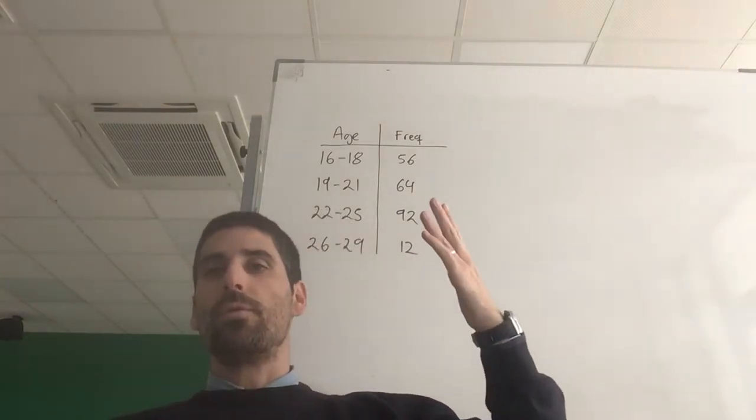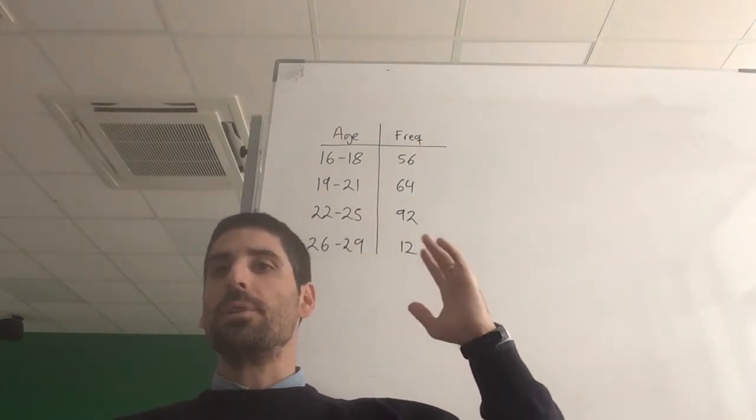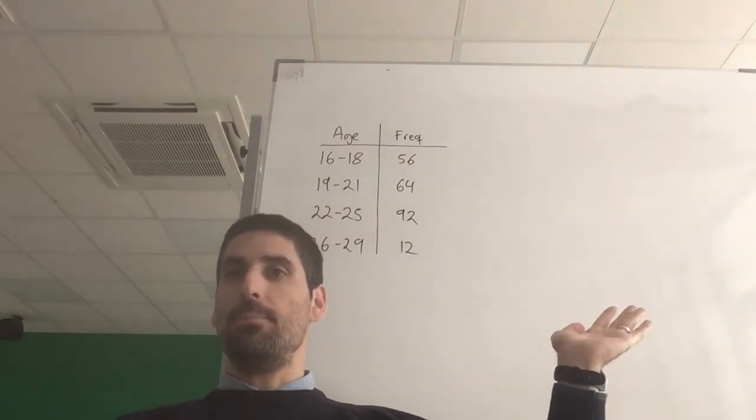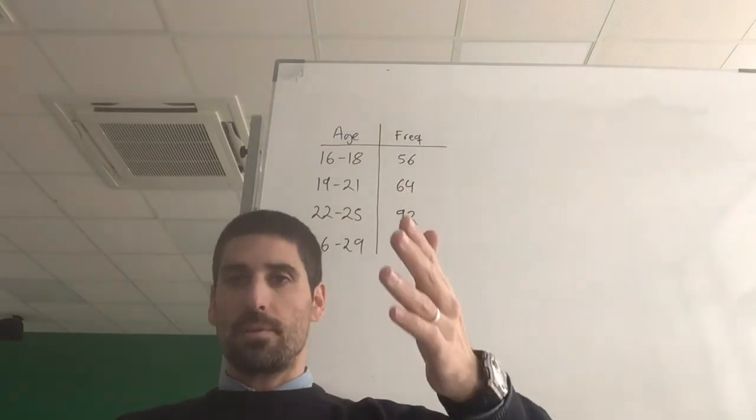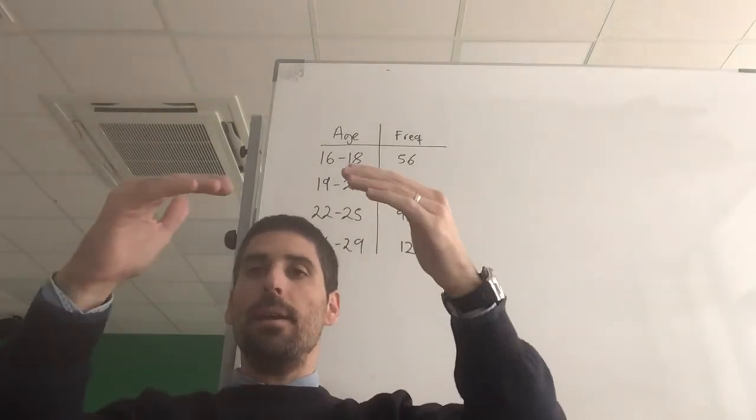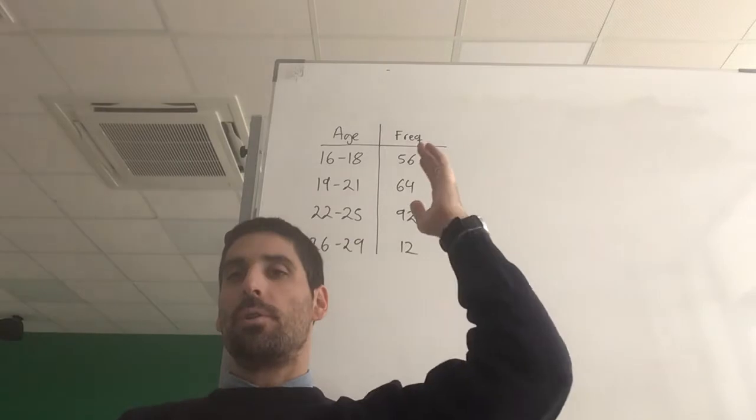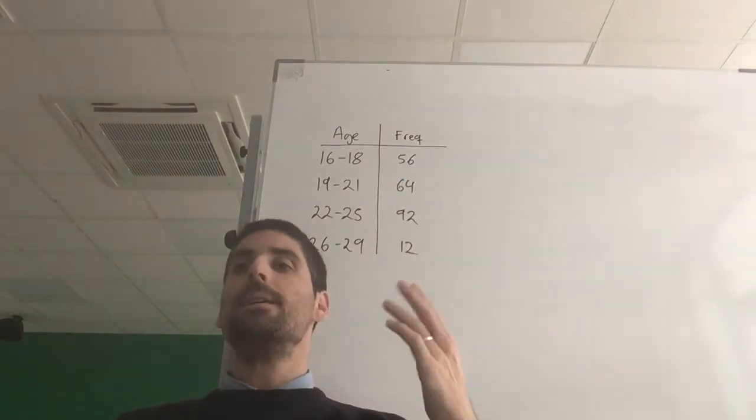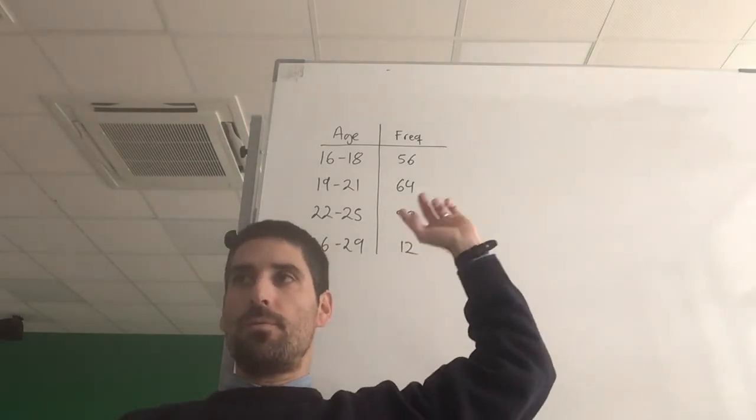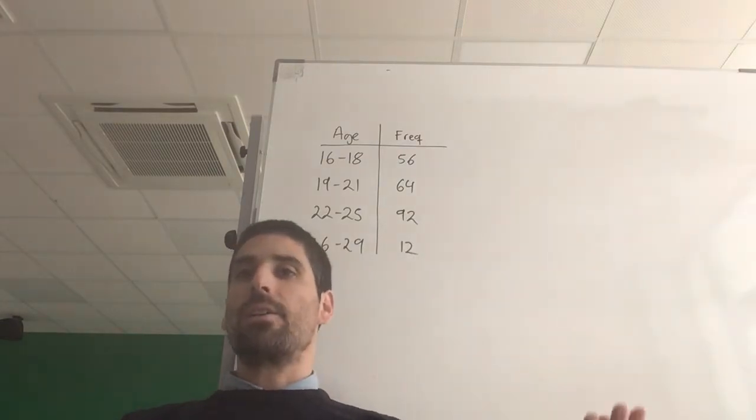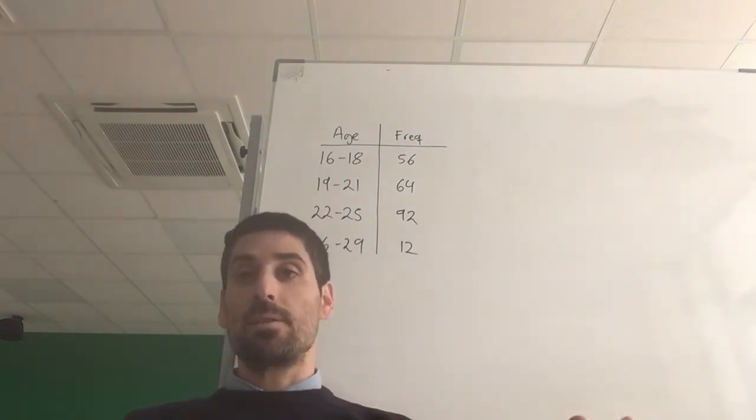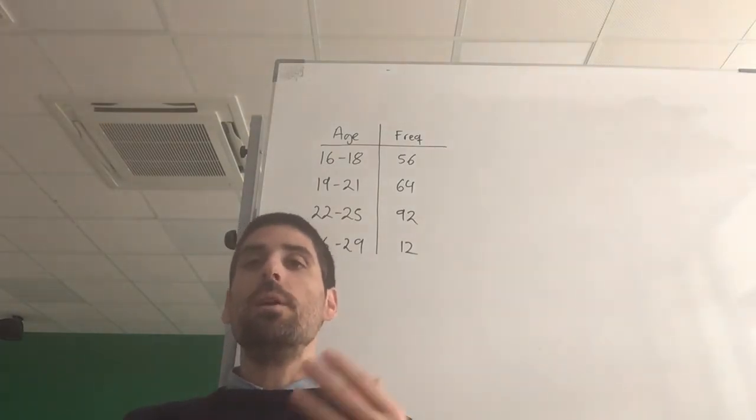Now what we've got is a grouped data table. How is this table different from the one in the previous video? That's right, as you can see the ages of the people are in classes or categories. We go 16 to 18, 19 to 21, etc. So do we know for sure those 56 people what were their actual ages? No we don't. They could all be 16, 17, or 18 years old. We simply know they are in that category.